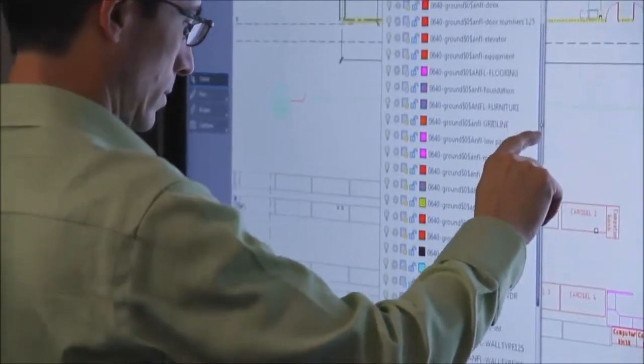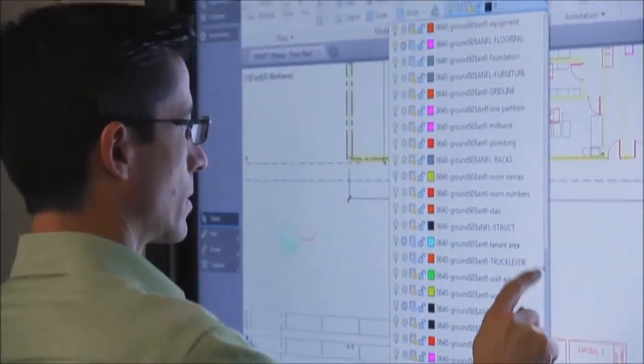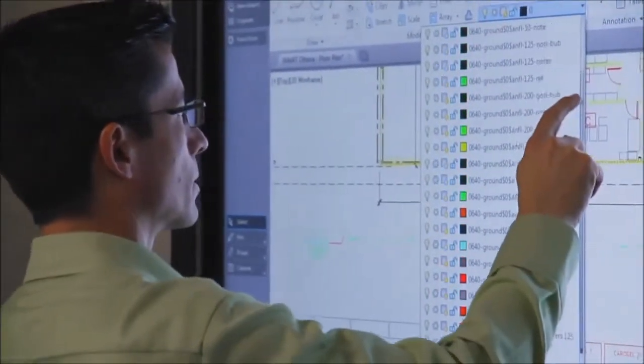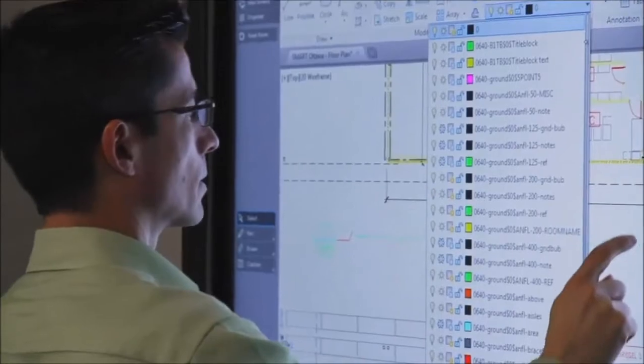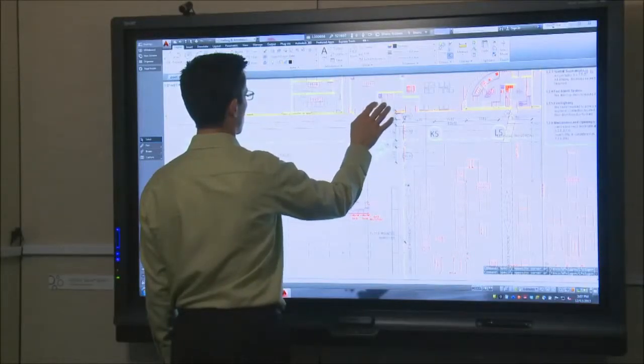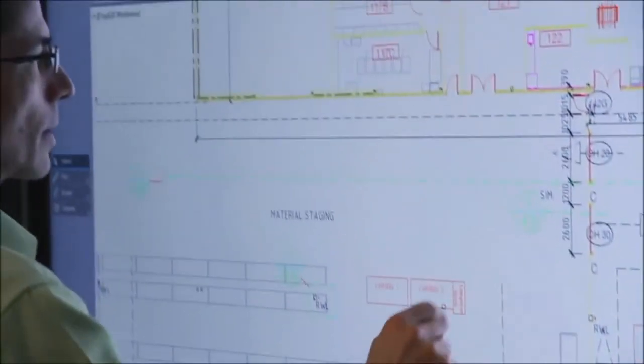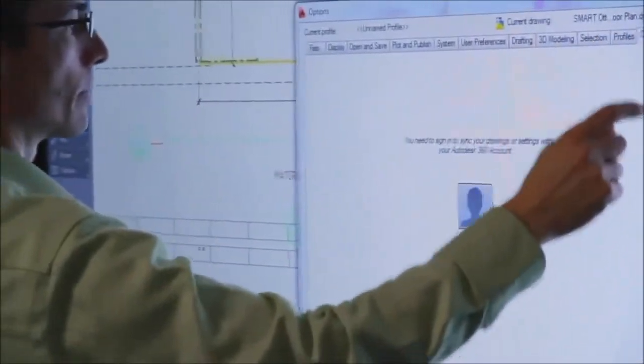With the integration to AutoCAD, my finger acts as a mouse and I can easily select AutoCAD menu items while standing at the board. I can also bring up object specific actions with an easy right click gesture. Using simple multi-touch gestures, I can manipulate the view I want without the need for a mouse or keyboard. Once I have the image that I want to review with the team,